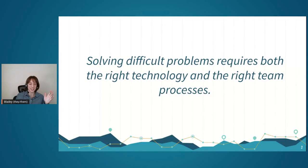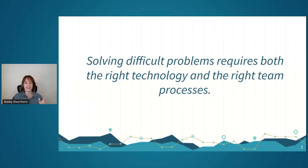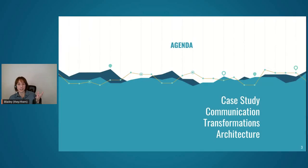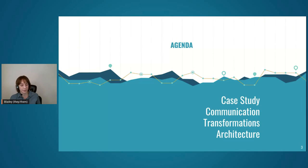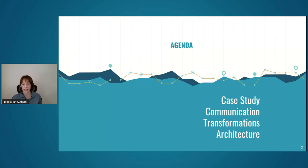At a high level, the general gist of this presentation is: if you're solving difficult problems in tech, you need both the right technology and the right team processes. Human in the loop data pipelines are a great example of that. I'll start with a case study, then focus on lessons learned — specifically communication best practices, how we approach transformations, and some architecture recommendations.